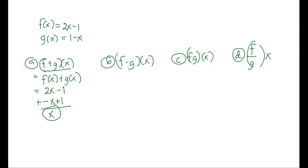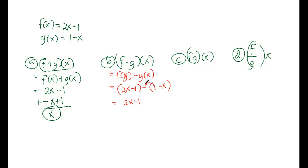Now let's go to the difference function, which is f(x) minus g(x). Our f(x) is 2x minus 1, minus g(x), which is 1 minus x. We copy the first term f(x), then distribute the negative sign to the terms inside g(x). Negative 1 times 1 is negative 1, and negative 1 times negative x is positive x. So 2x plus x is 3x, and negative 1 minus 1 is negative 2. Our difference function is 3x minus 2.